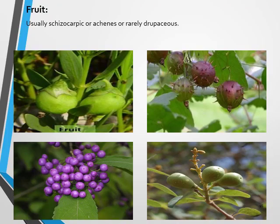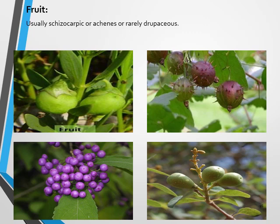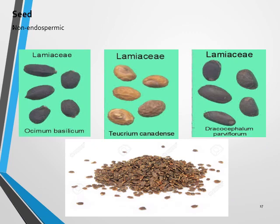The fruit of this family is majorly schizocarpic — a dry, many-seeded fruit which breaks into a number of one-seeded parts on ripening. In some cases the fruit is in the form of achenes, where the pericarp is membranous or leathery and free from the seed coat or testa. In very rare cases the fruit is drupaceous, meaning the mesocarp forms the edible portion and the endocarp forms a hard shell or stone. The seed of this family is non-endospermic.